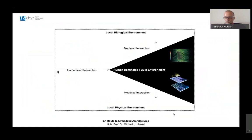Before humans started transforming the environment through construction, local living species and ecosystems interacted in an unmediated way with the geophysical environment. With increasing construction, this interaction is unavoidably mediated by construction. Architecture needs to take full responsibility for this mediation. Two questions arise: first, can architecture be in the service of the natural environment? Second, can architecture and environment be integrated in some meaningful way?